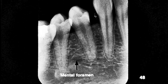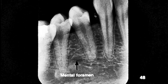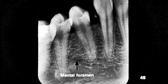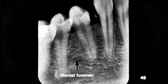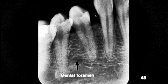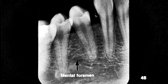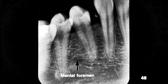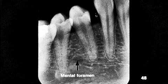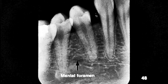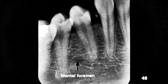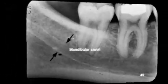Between the premolars is the radiolucent mental foramen. Sometimes it can even appear at the apex of a tooth and look like an abscess. To differentiate it from an abscess, another view would be taken, and if the radiolucency moves, it is anatomy. If it's fixed, it's pathology.